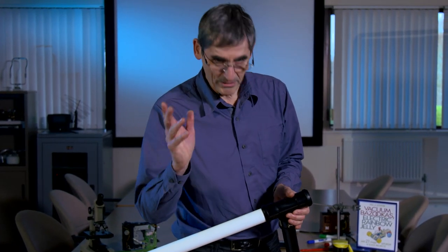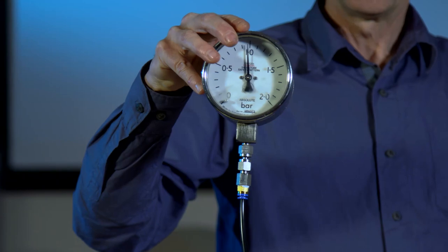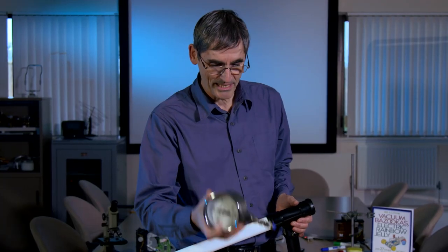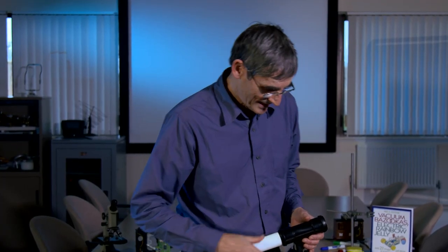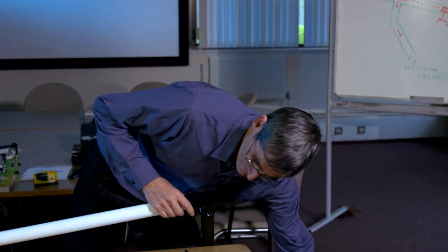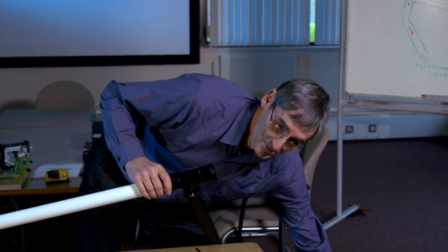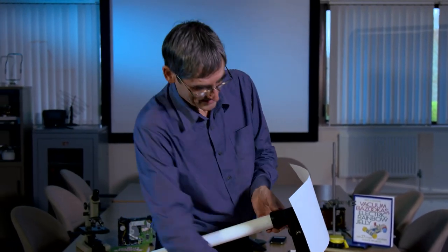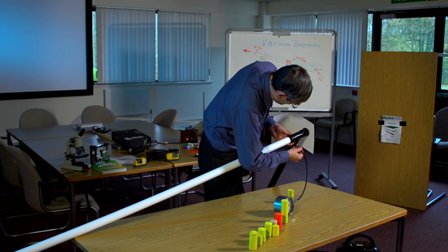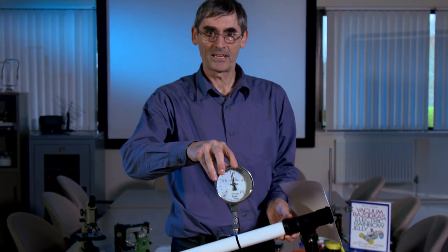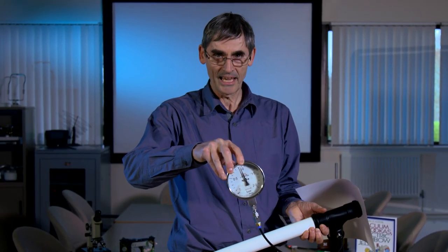We'll build a much better vacuum pressure. Now we've got a vacuum gauge here so we can measure how much vacuum pressure we're getting. I'll put the vacuum cleaner on and then put this muzzle paper over the end, and we should get a much better vacuum pressure now.